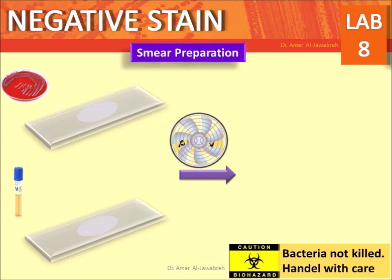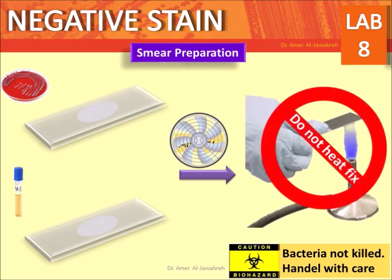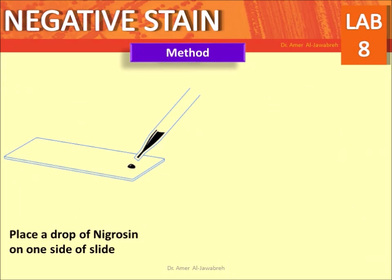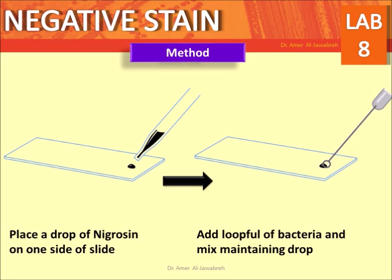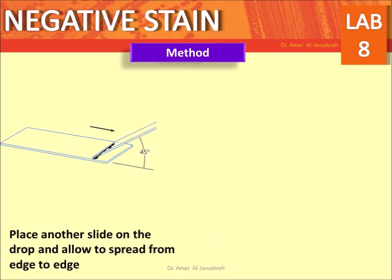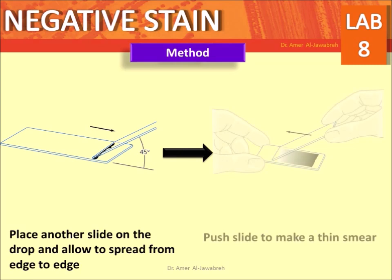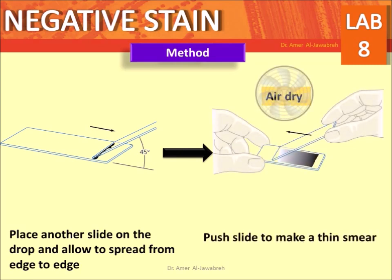Smear preparation: prepare bacterial smears from agar plate or broth. Air dry — do not heat fix, as bacteria are not killed and must be handled with care. Method: place a drop of nigrosine on one side of the slide, add a loopful of bacteria and mix into the drop. Place another slide on the drop and allow it to spread from edge to edge, then push the slide to make a thin smear. Air dry.